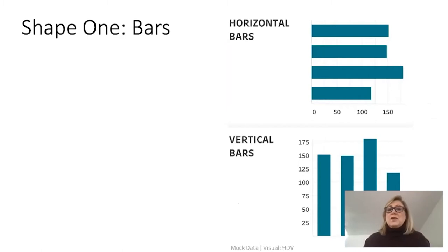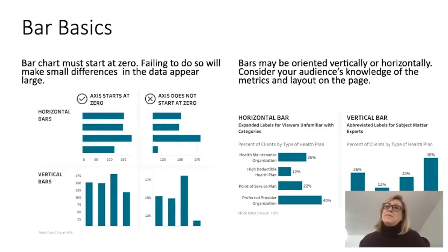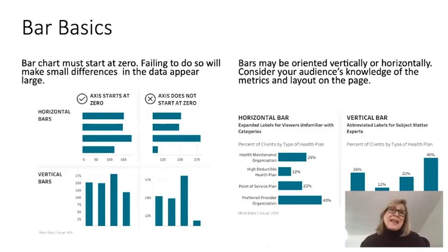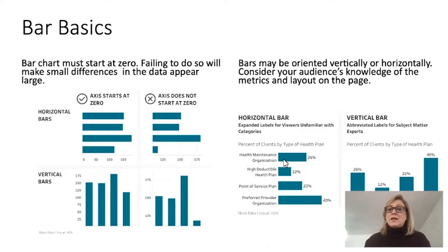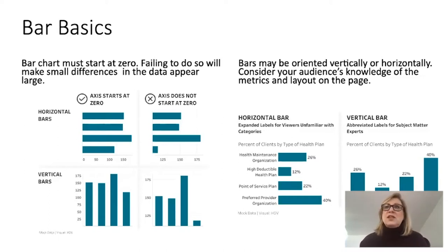Bars can be used either horizontally or vertically. When people ask which way to turn them, the answer is: it doesn't matter. What matters is your audience — do they need expanded labels or do they know the acronyms? If your audience isn't familiar with acronyms, flip the bars horizontally and use the label space to label each bar. If your audience is familiar and vertical makes more sense, use the acronyms. Think about your audience and what else will be on the page.